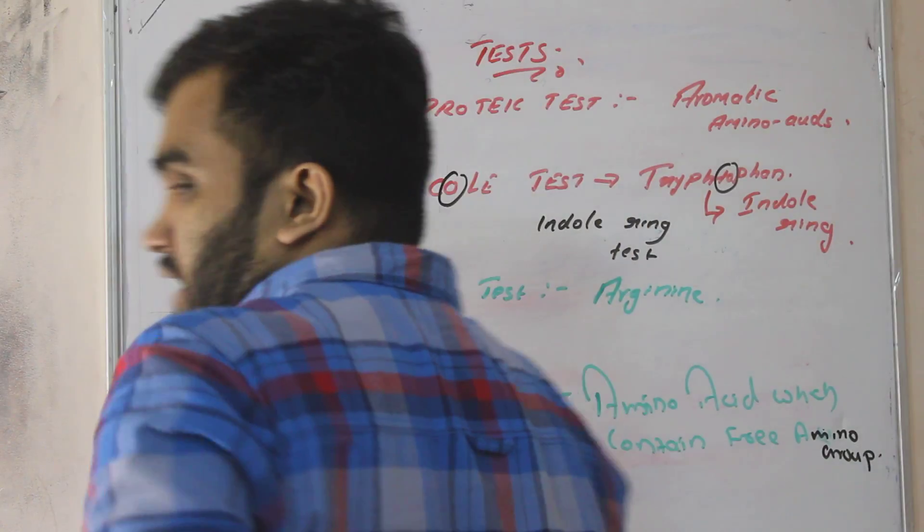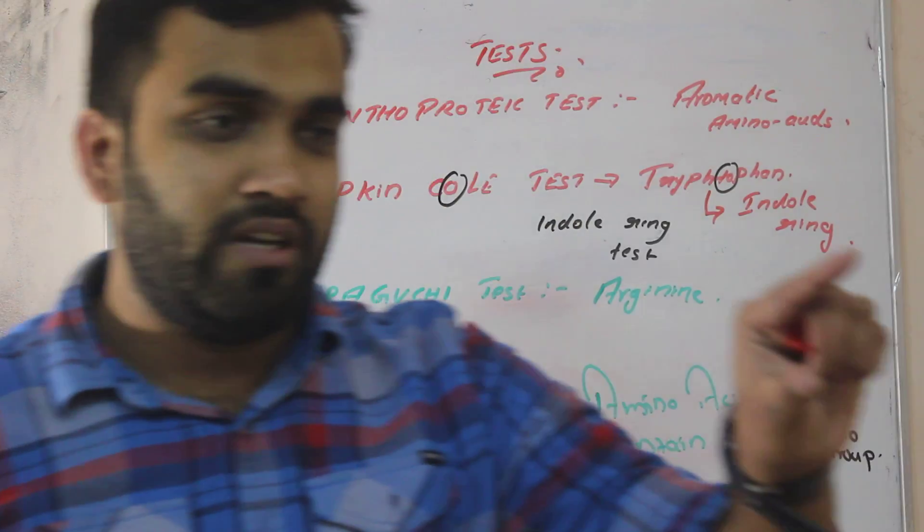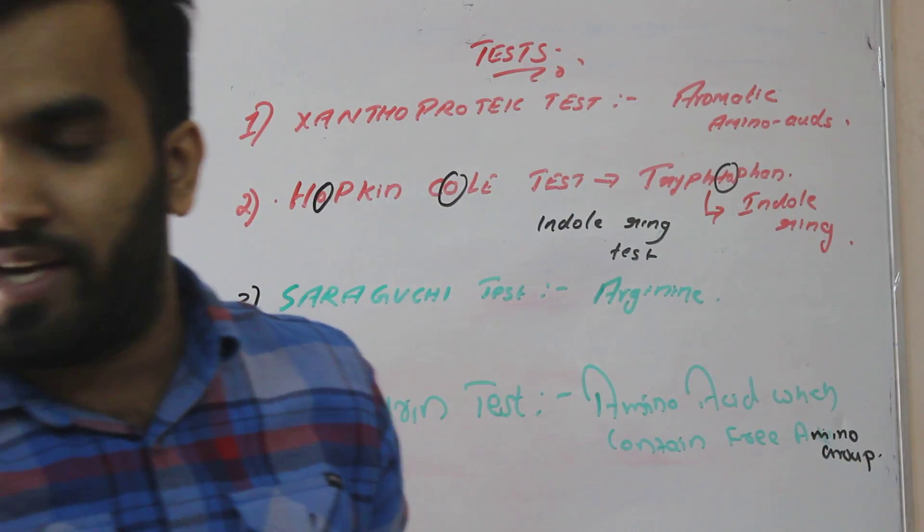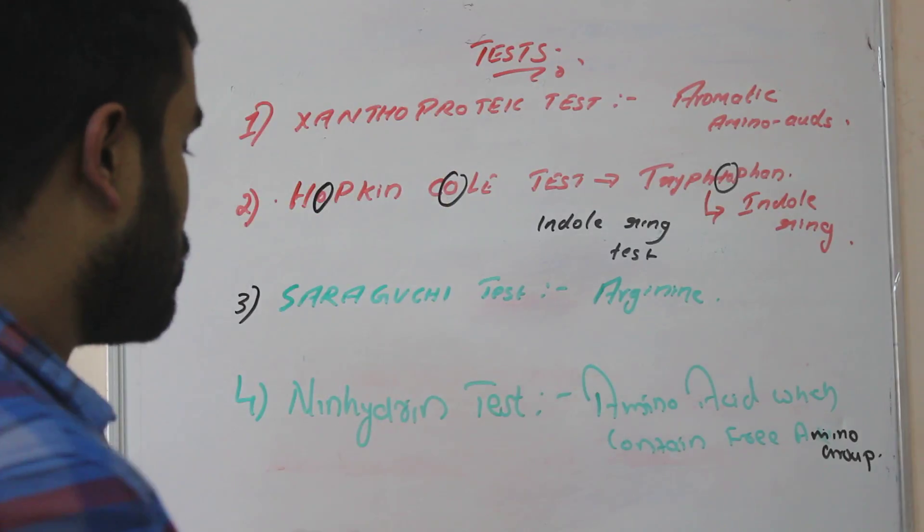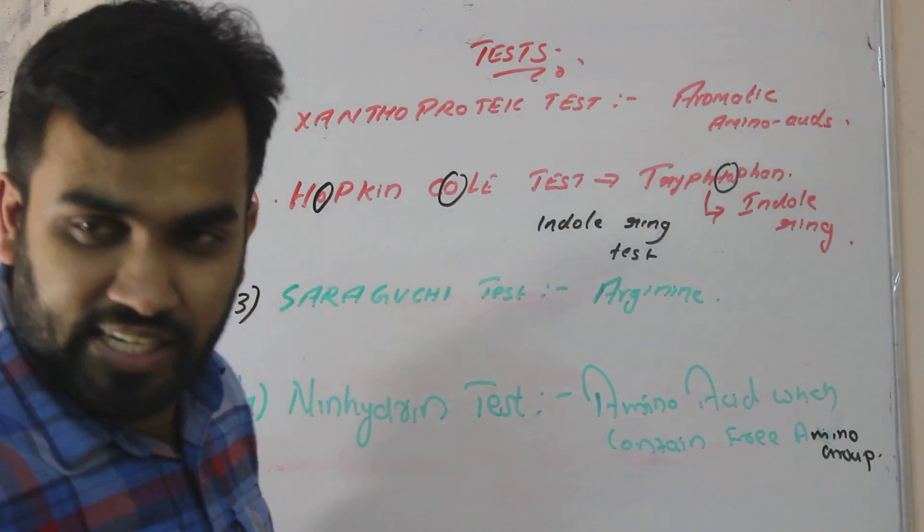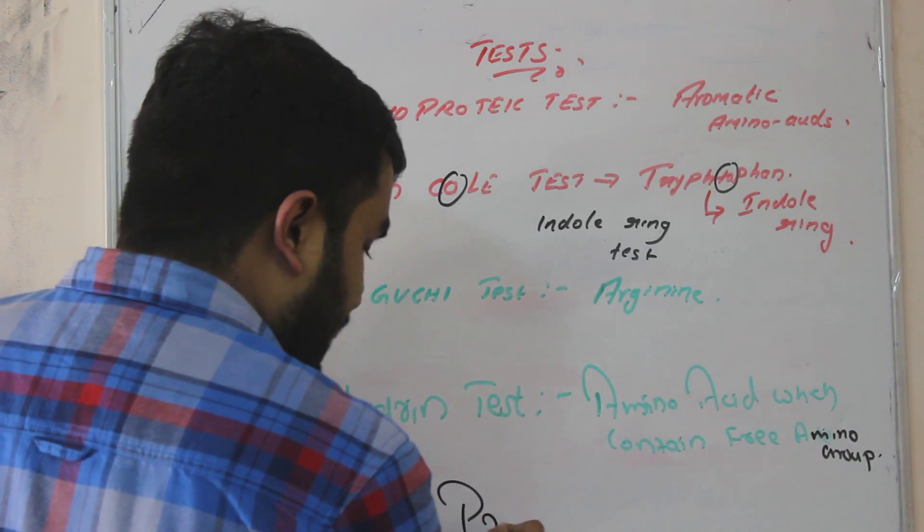Now I can ask you a question. I have told you at the beginning there is an amino acid which doesn't have a free amino group. What is that? Proline. Proline is an amino acid. So does proline give positive ninhydrin test or negative? Negative, because proline doesn't have a free amino group.